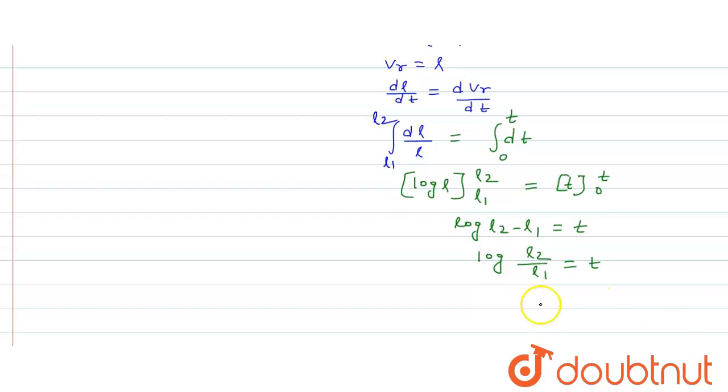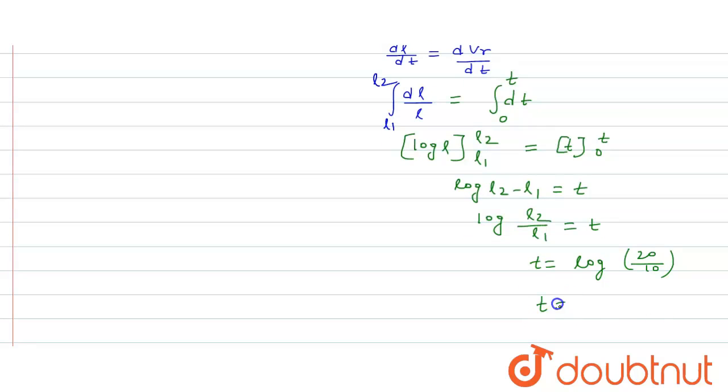So time T equals log L2 value is 20 upon L1 which is 10. So time T equals log 2 and log 2 value is 0.69. So this will be 0.69 second. Thank you.